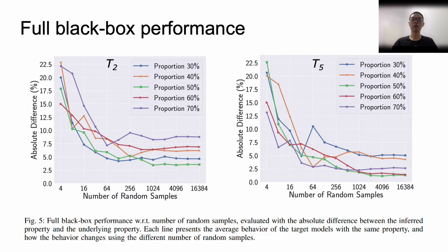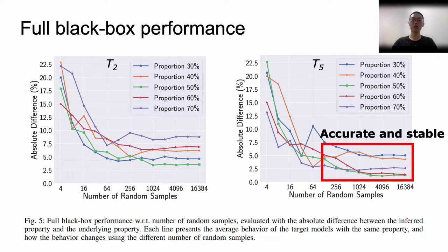Then, we evaluate the influence of the number of random samples. We repeat our full black box attack using different numbers of samples, and average the results for target GANs carrying the same underlying property. For instance, we plot a blue line to represent the average inference performance against target models with 30% males. With the increasing number of random samples, the lines become narrower and more stable, which means our attack becomes more accurate and more stable.